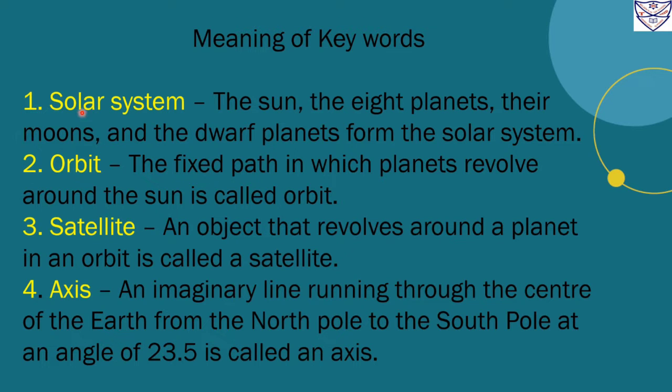Number 1. Solar system. The sun, the eight planets, their moons and the dwarf planets form the solar system.